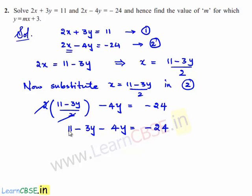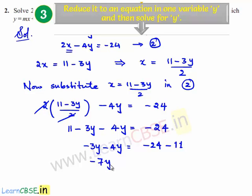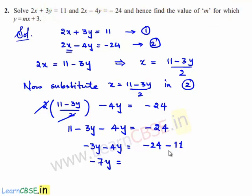Transposing 11 to the right-hand side, we get minus 3y minus 4y is equal to minus 24 minus 11. Minus 3y minus 4y is minus 7y, and minus 24 minus 11 is minus 35. The minus symbol cancels on both sides, so y is equal to 35 divided by 7, which is 5.